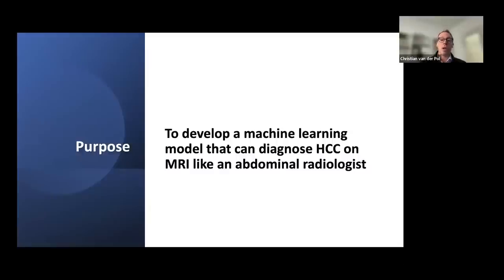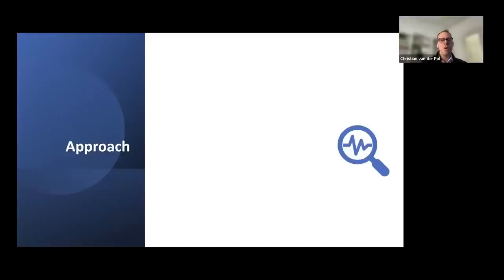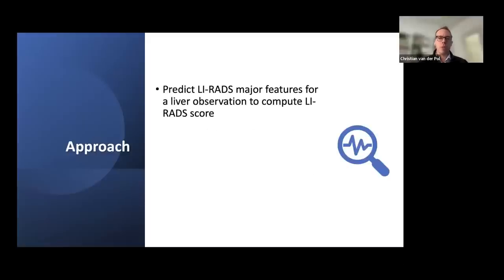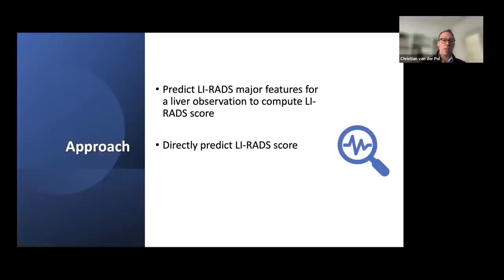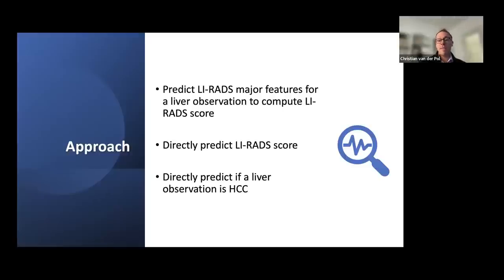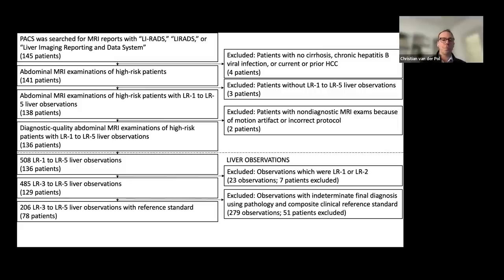Our purpose was to develop a machine learning model that could diagnose HCC on MRI like an abdominal radiologist — a decision support tool for radiologists and for patients in regions lacking specialist expertise. We used a three-pronged approach: first, a model to predict which major features are present or absent (arterial phase hyperenhancement, non-peripheral washout, enhancing capsule); second, a separate model to directly predict the LiRADS score; and third, a model to directly predict whether a liver observation is HCC — not using LiRADS at all.